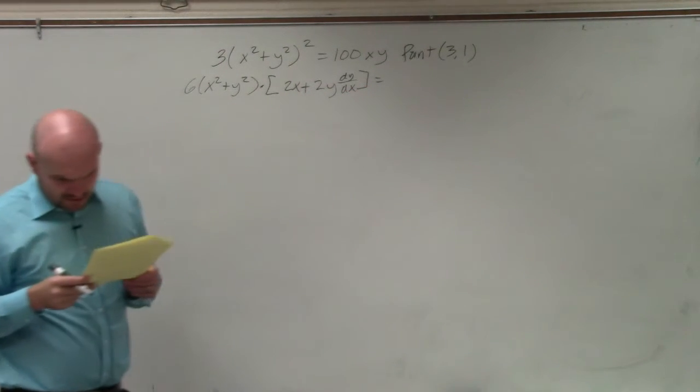Basically, what I did is I took out 100, and then I did x dy/dx plus y, because the derivative of x is just 1. Then I distributed the 100 back in. I basically just did the product rule of xy and then distributed the 100 back in.